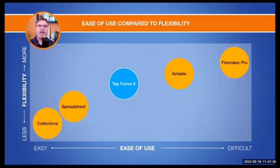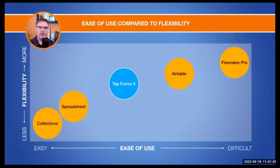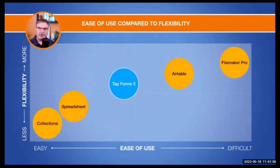TapForms 5 is a good solution for managing your lists — and that's basically what a database is. It manages your lists: groceries, invoices, serial numbers, albums. For example, I collect LPs and have a database where I keep track of which albums I own. Now when I go to an antique store and see an album, I just pull it up on my phone and see if I already have it. That's the beauty of all this.